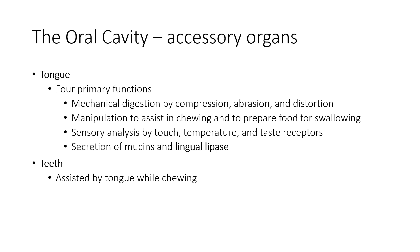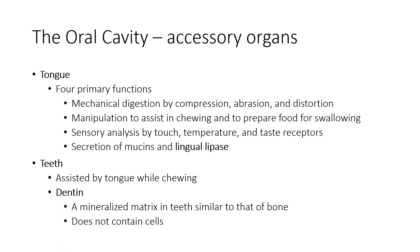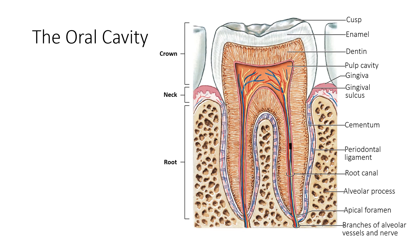The teeth are assisted by the tongue while chewing. Dentin is a mineralised tissue that makes up the teeth, similar to bone, and does not contain cells. The enamel is a hard calcified tissue covering the dentin in the crown of the tooth. Because it contains no living cells, tooth enamel cannot repair damage from decay or from wear.